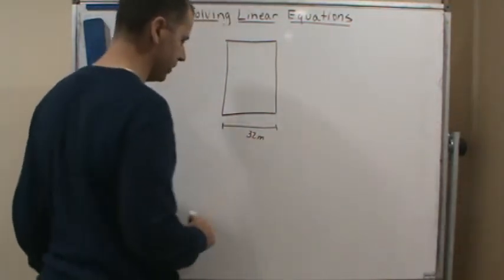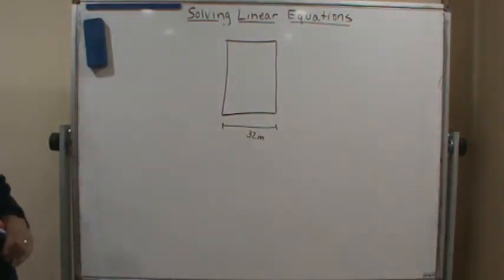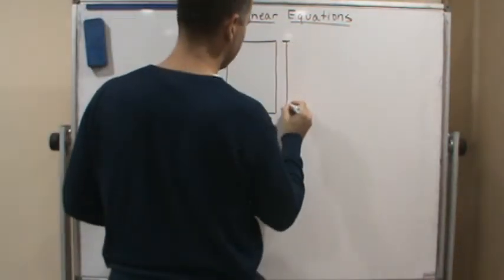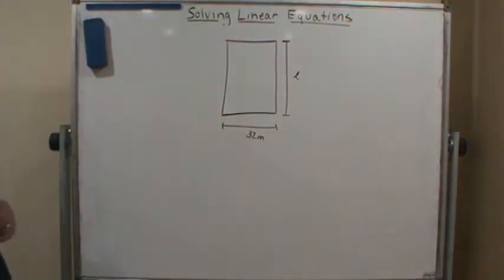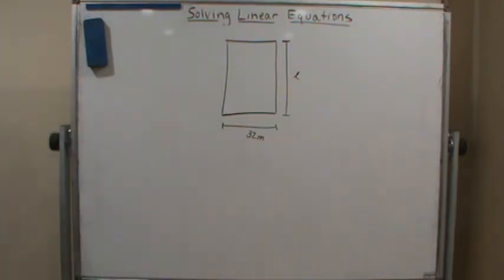But we don't know the length, that's what we're trying to find out. So the length, we don't know, so I marked that with an L. But we do know that around the whole plot it has fencing, but we know the length of fencing, the linear length of fencing is 158 meters.